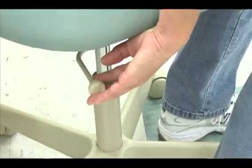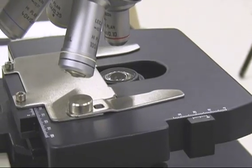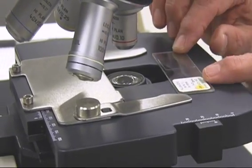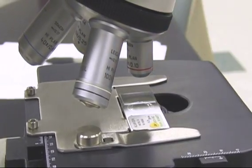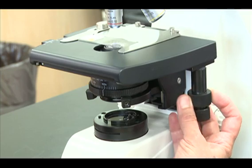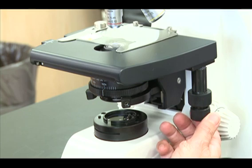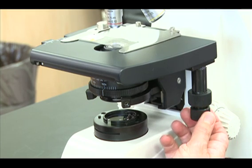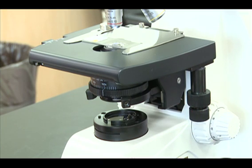Adjust your chair for comfortable viewing. Guide a slide gently between the stage clips and align it with the back of the holder. Center the slide over the circle of light with the stage controls. The lower knob moves the stage left and right. The upper knob moves the stage front to back.